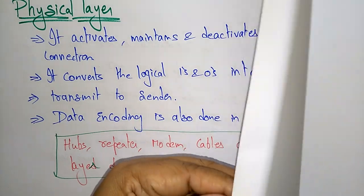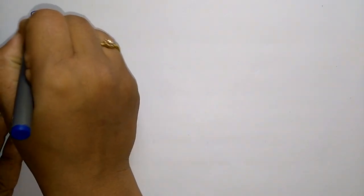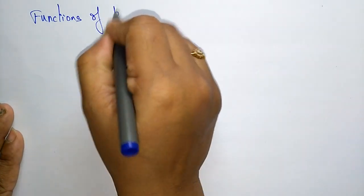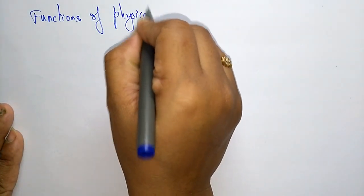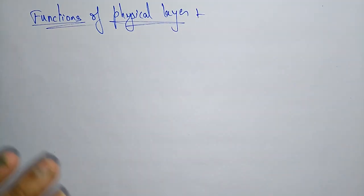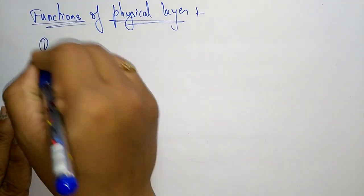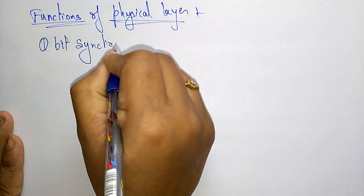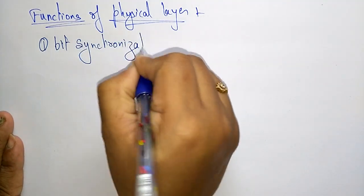Now let us see the functions of the physical layer. This is the lowest layer present in the OSI reference model. The first function is bit synchronization.